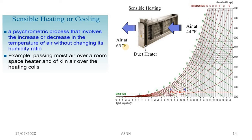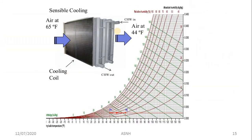In sensible heating we increase the temperature of air without changing its humidity ratio. In sensible cooling we decrease the temperature of air without changing its humidity ratio. An example is passing moist air over a room space heater — the moist air passes through the heater and we get heated air at the end.